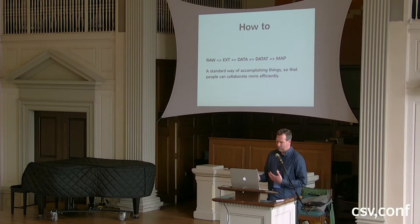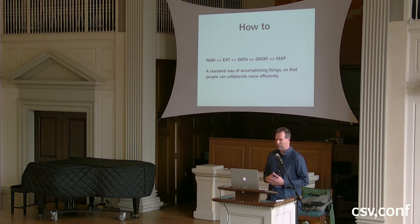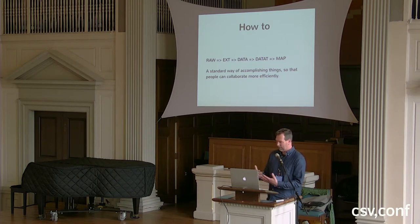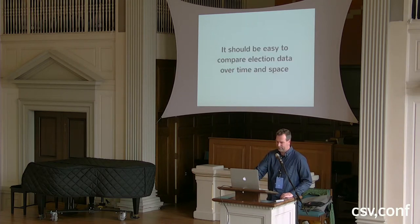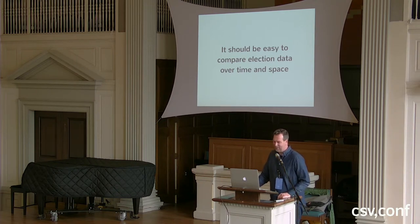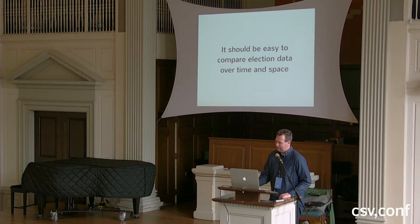So it's also, next to the modules, a way of how to work with data — basically how to name data. And we coined some terms like raw, ext for external data, then the data when it comes together with the map, and the data when it's transformed. The idea is to have a standard way of accomplishing things so that you can talk about it, and it should be easy to compare election data over time and space. That was what we really wanted to do, and it's not.